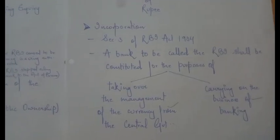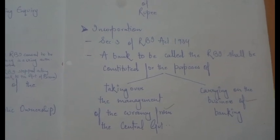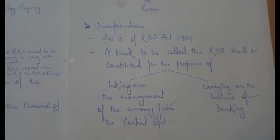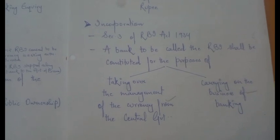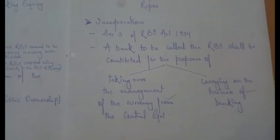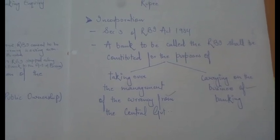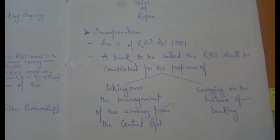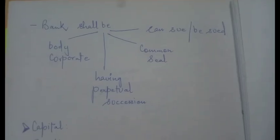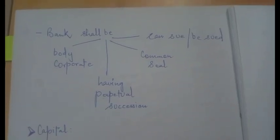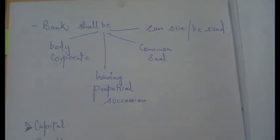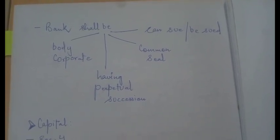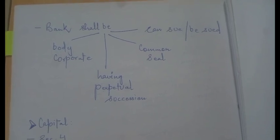If we talk about the incorporation under the RBI Act, Section 3 of the RBI Act 1934 talks about the provision for incorporation. It states that a bank to be called the RBI shall be constituted for the purposes of: first, taking over the management of the currency from the central government, and second, carrying on the business of banking. Its characteristics are that it would be a body corporate, having perpetual succession, a common seal, and it can sue and be sued in its own name, exactly like any other company.